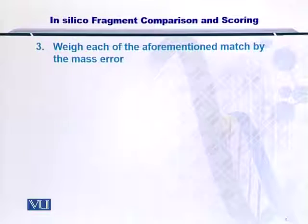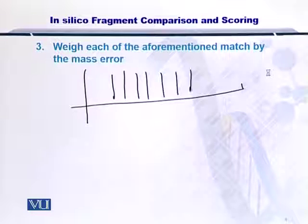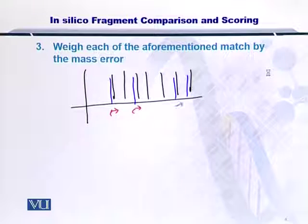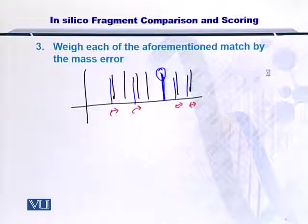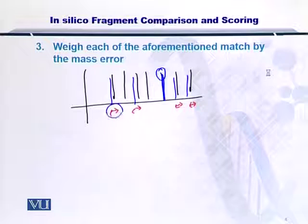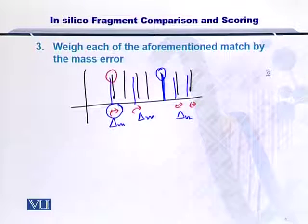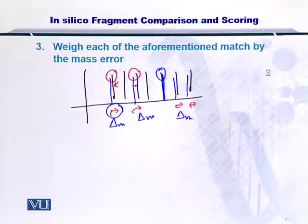Next, we weigh each of these scores with the mass errors. As you would have noticed, while comparing the experimental and the in silico masses, there is a slight error between these comparisons. Of course, it is quite rare that you arrive at an exact match. So, you have to see how far your peak is from the in silico spectrum. You can measure this quality by simply looking at the mass difference that exists between each of these peaks. For example, this peak is closer to the in silico peak as compared to this peak, wherein the distance or the mass difference between the two peaks is large.